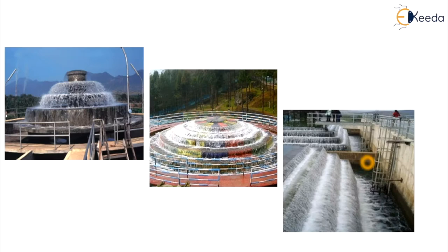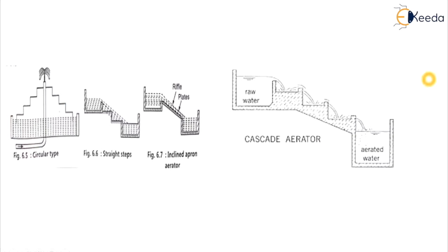The cascade aerator increases dissolved oxygen in water and strips dissolved gases from it. It is a natural flow aeration system that consumes less energy than forced aeration systems, making it economical. The first two images show the circular type cascade aerator and the third shows the rectangular type. Water is pumped through a central pipe and flows as a thin sheet through a number of steps, coming into contact with air for gas transfer. These are the types of cascade aerator.